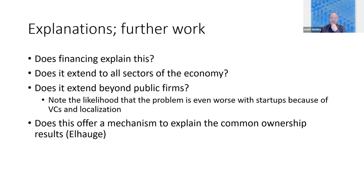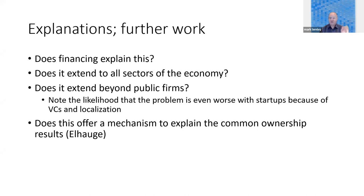This may offer a mechanism to explain the common ownership literature. There's a big running debate in antitrust over the last five years. Ina Raouke demonstrates that companies that are commonly owned tend to compete less effectively than companies that aren't — where they have overlapping shareholders. A number of people have pushed back saying: what's the mechanism? We see the data and the statistical result, but how does it work? Interlocking directorates or overlapped directorates by financing companies may actually provide an explanation for how this works.